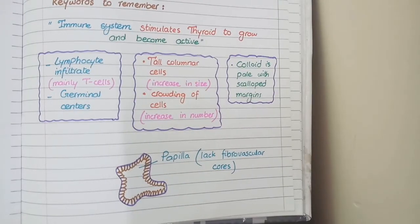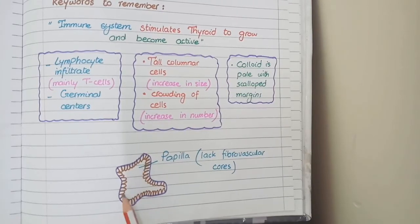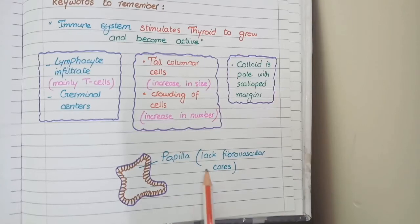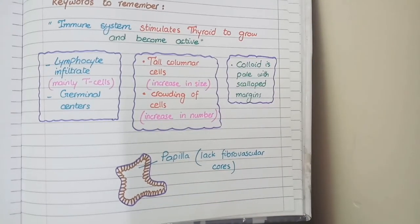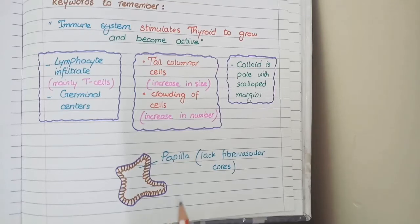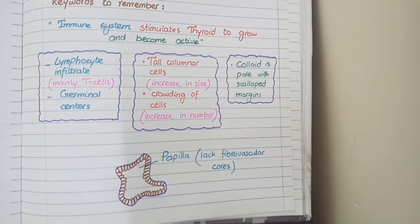An important distinction: the papilla in Graves' disease are formed merely due to crowding of cells, so they are not true papilla and they lack fibro-vascular cores. Conversely, the papilla in papillary carcinoma of the thyroid are true papilla and are well equipped with fibro-vascular cores.